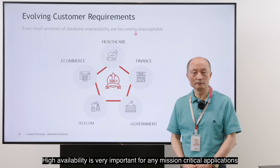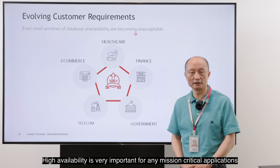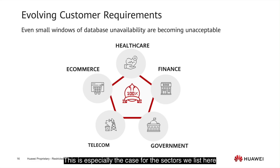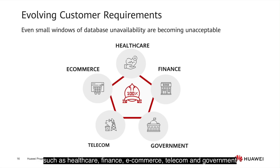High availability is very important for any mission-critical applications. Any service disruption may lead to big business impact resulting in financial loss. This is especially the case for the sectors we list here, such as healthcare, finance, e-commerce, telecom, and government.